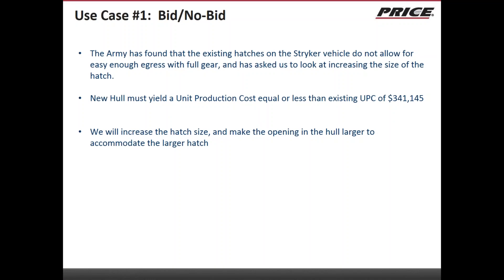The first use case we'd like to demonstrate today is a bid-no-bid case. The Army has found that the existing hatches on the Striker vehicle do not allow for easy enough egress with full gear, and has asked us to look at increasing the size of the hatch. A new hull must yield a unit production cost equal to or less than the existing unit production cost of the hull of $341,145. In True Planning, we will estimate the increase in hatch size and conversely make the opening in the hull larger to accommodate the larger hatch.